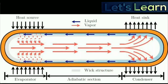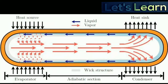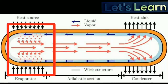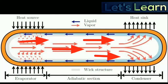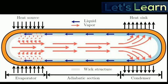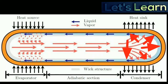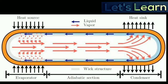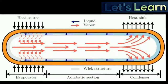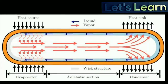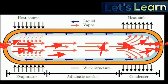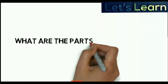Now let's see the working principle of the heat pipe. At the hot interface of the heat pipe, a liquid in contact with a thermally conductive solid surface turns into a vapor by absorbing heat from that surface. The vapor then travels along the heat pipe to the cold interface and condenses back into a liquid, releasing the latent heat. The liquid then returns to the hot interface through either capillary action, centrifugal force, or gravity, and then the cycle repeats.